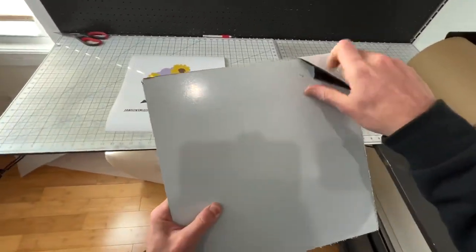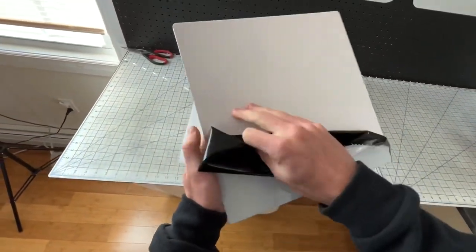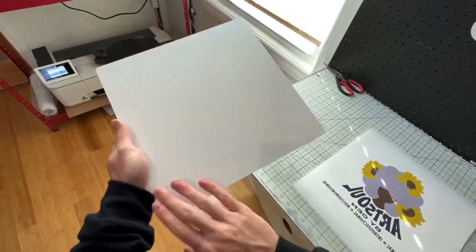I trim that up, get it nice and square, and then I take my sublimation panel which has special coating on top so that the ink can transfer onto it.